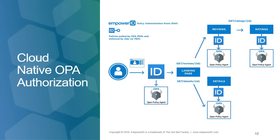This is an example of Open Policy Agent in action. You have the EmpowerID API gateway protecting access to various microservices — reviews, ratings, details — and enforcing localized decisions that are authored in the EmpowerID system to control what the user can do, enforcing pre-authentication and multi-factor authentication, and fine-grained policies over exactly which APIs and actions they can perform.